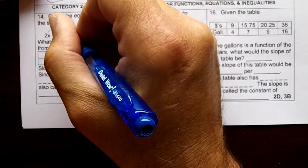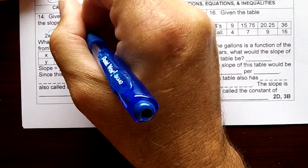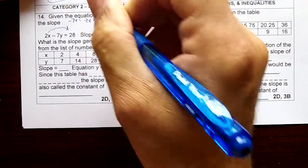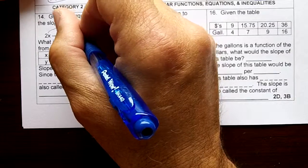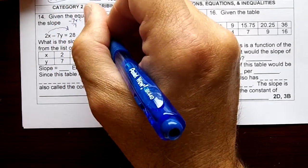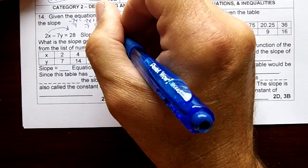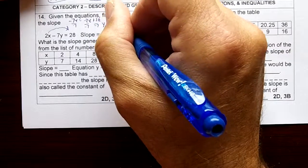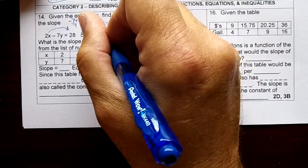You're going to move the 2x over, so I'm going to have negative 7y equals negative 2x plus 28. I'm going to divide everything by negative 7. So my equation would be y equals 2 over 7x minus 4. My slope would be 2 over 7.